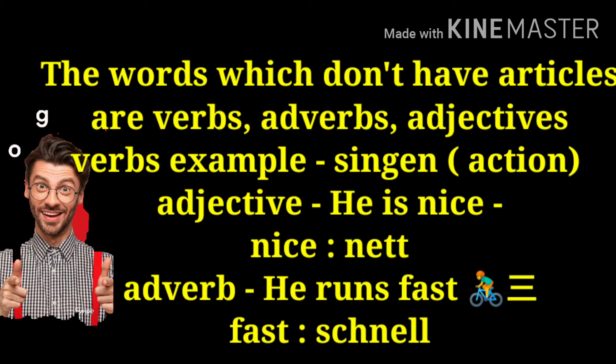'He runs fast' — we are describing the running: whether it is fast or slow. So 'run' is the verb, and to describe the verb we use the adverb. That is the difference between adjective and adverb: an adjective describes the noun or subject, while an adverb describes the verb.